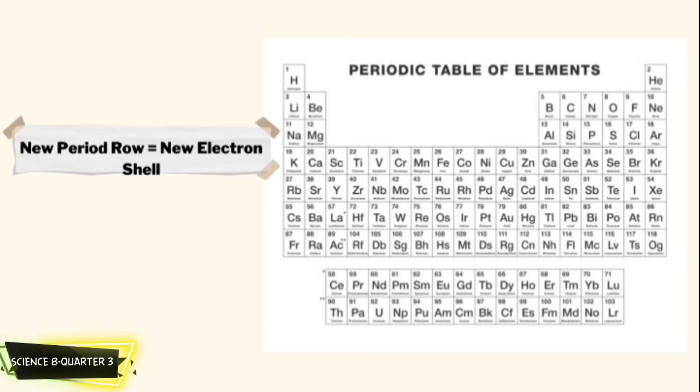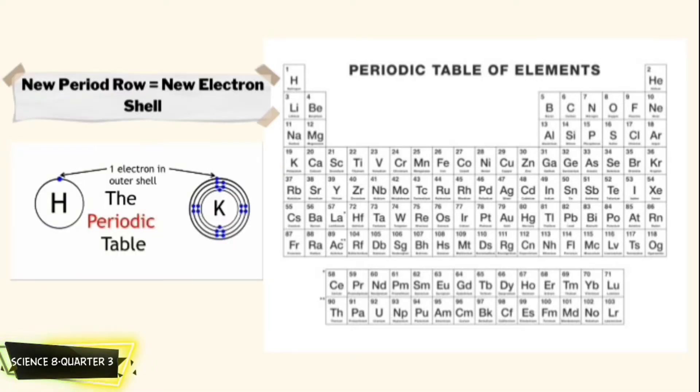Each period number indicates the number of orbitals for the elements in that row. For instance, period 1 includes elements that have one atomic orbital where electrons spin. Period 2 has two atomic orbitals, period 3 has three and so on up to period 7.